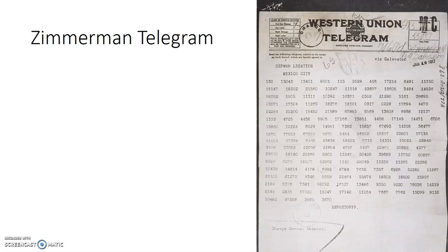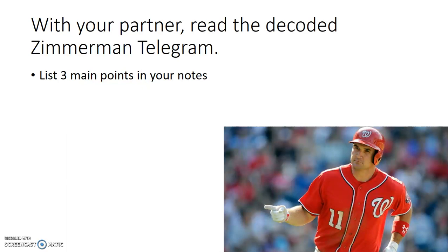For today's class we're going to start by looking at the Zimmerman telegram. This is an image of the actual telegram from Germany to Mexico, and you can see it's obviously encoded here. What you're going to be doing is using the other Zimmerman telegram attached to this lesson to see the decoded message and figure out what it means. I'm looking for you to read the decoded Zimmerman telegram that the British intercepted and list the three main points in your notes. Go ahead and pause it here, do that, then come on back to the lecture when you're done.